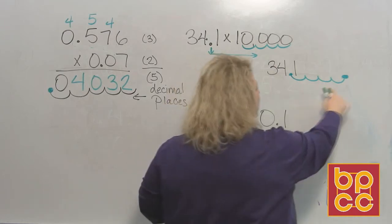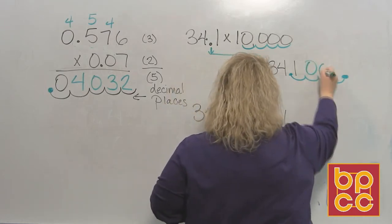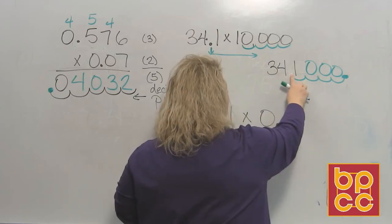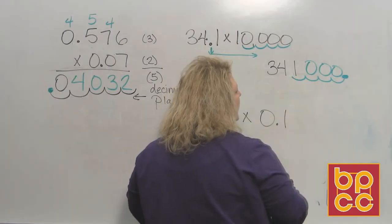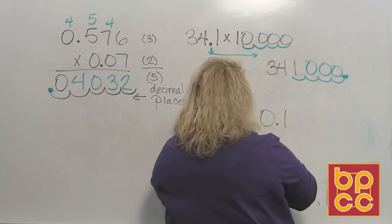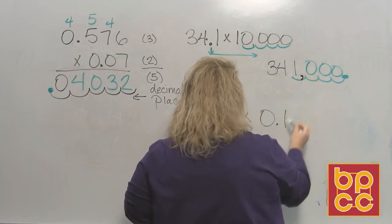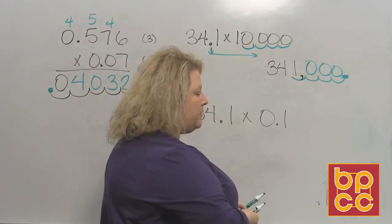And when I move it 4 places, again, all these missing spots get filled with zeros. So my decimal point would move. And what is that number now, when you put this comma in here? That would be the whole number 341,000.